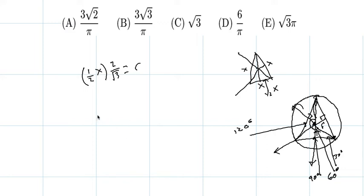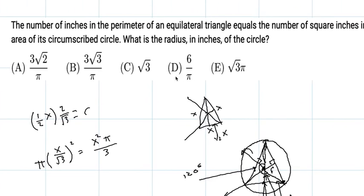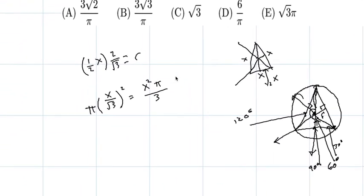So from here, what we know is the area of the circle is just πr², so the area of the circle is going to be π times (1/2 x × 2/√3), which is just (x/√3)², which is then x²π/3. So the area of the circle is this, and what the problem had told us was that the perimeter of the equilateral triangle is equal to the area of the circle.